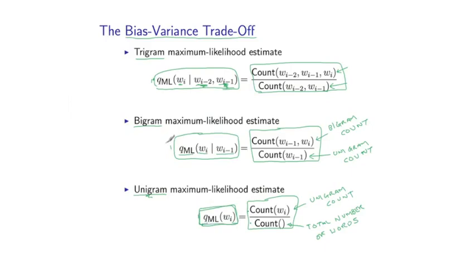The bigram estimate is somewhere between these two extremes, where it conditions on a reasonable amount of context, and it converges reasonably quickly to its true underlying value.